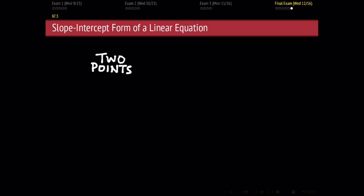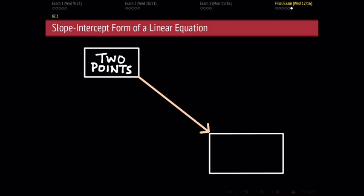So one of the first skills that we want to build in this section is the ability to take those two points and to determine from those two points an equation for the line that connects those two points together. This is probably the universal skill in this entire section, to take those two points and determine an equation.